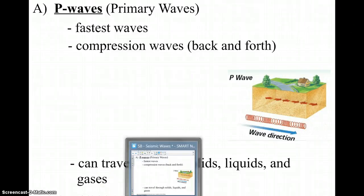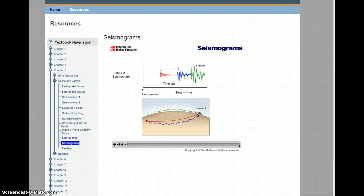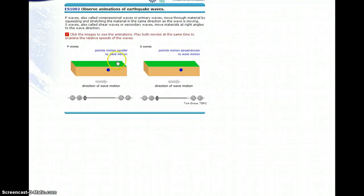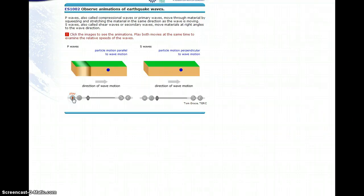Let's take a look at an animation of a P wave traveling through an object. On the left side you'll notice a picture of the Earth with a little blue dot. When a P wave is sent through that dot, notice that the dot moves back and forth — because P waves are compression waves that squeeze and stretch.